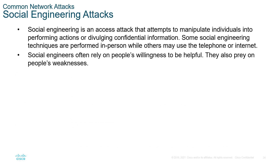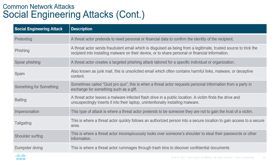Common social engineering attacks include phishing, spear phishing, and spam. Tailgating is when you follow an authorized person in quickly behind them as the door closes. Dumpster diving — looking through their garbage. Shoulder surfing — where the threat actor looks over someone's shoulder to steal content from their screen or passwords. Spam is also classified as a social engineering attack; though it's more junk mail, it might have harmful links, malware, or deceptive content.